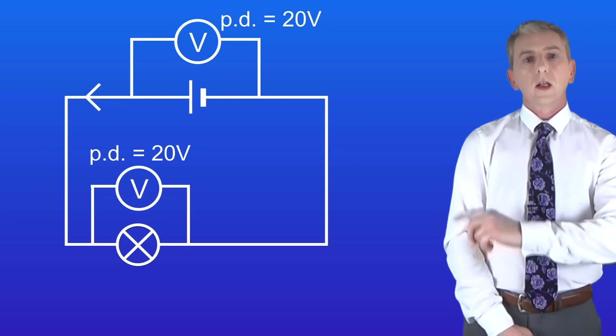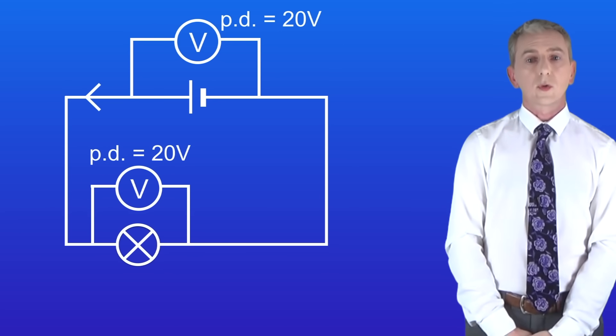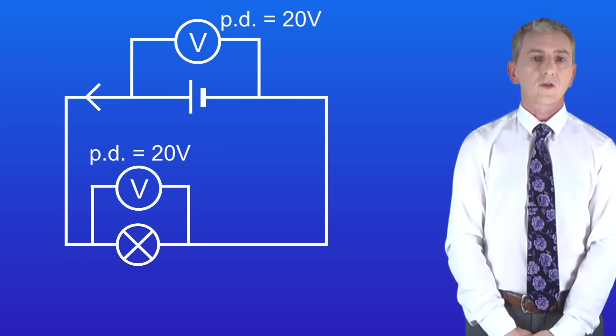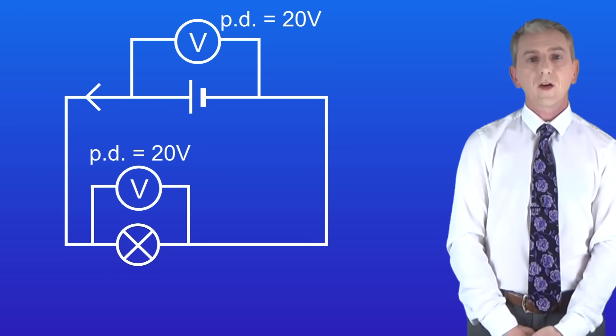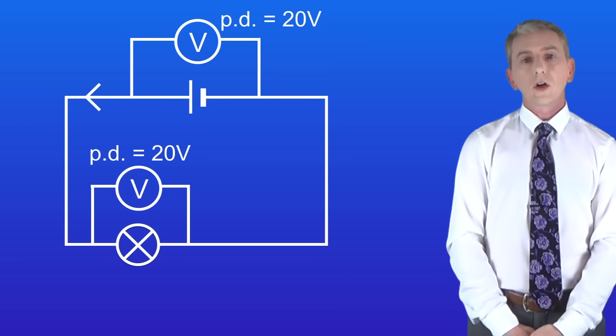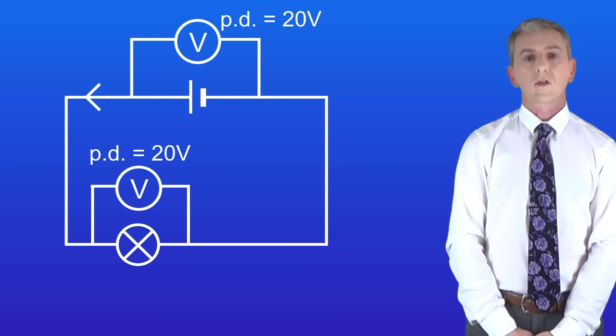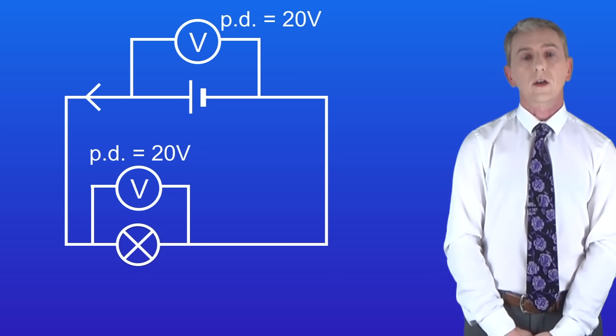Looking at this circuit you can see that I've got a lamp connected to a cell. The potential difference across the lamp is 20 volts and the lamp is very bright. Now if I wanted to make the lamp dimmer I could use a cell with a lower potential difference or I could add extra resistance into the circuit.